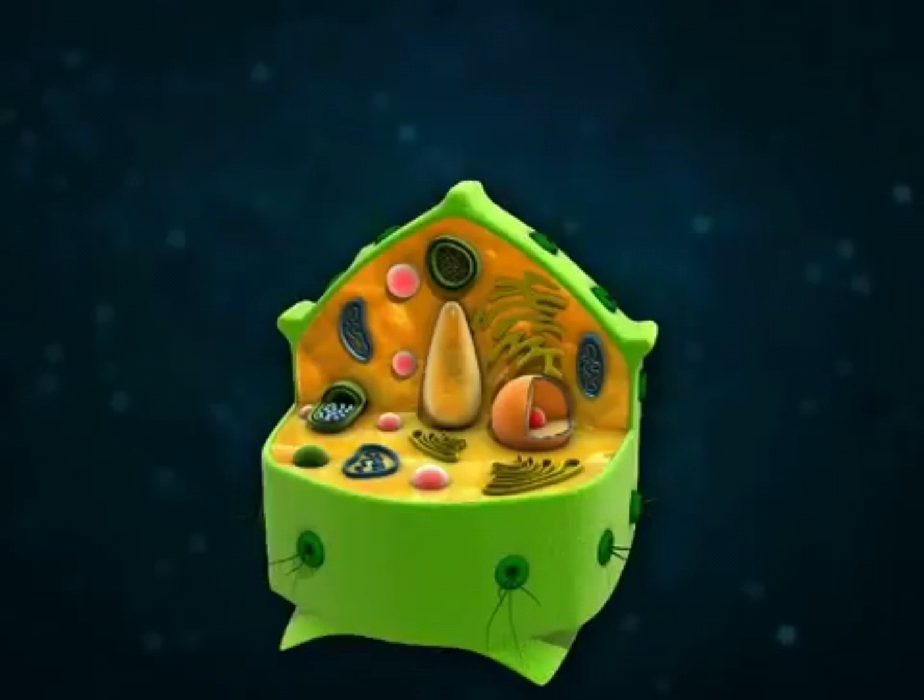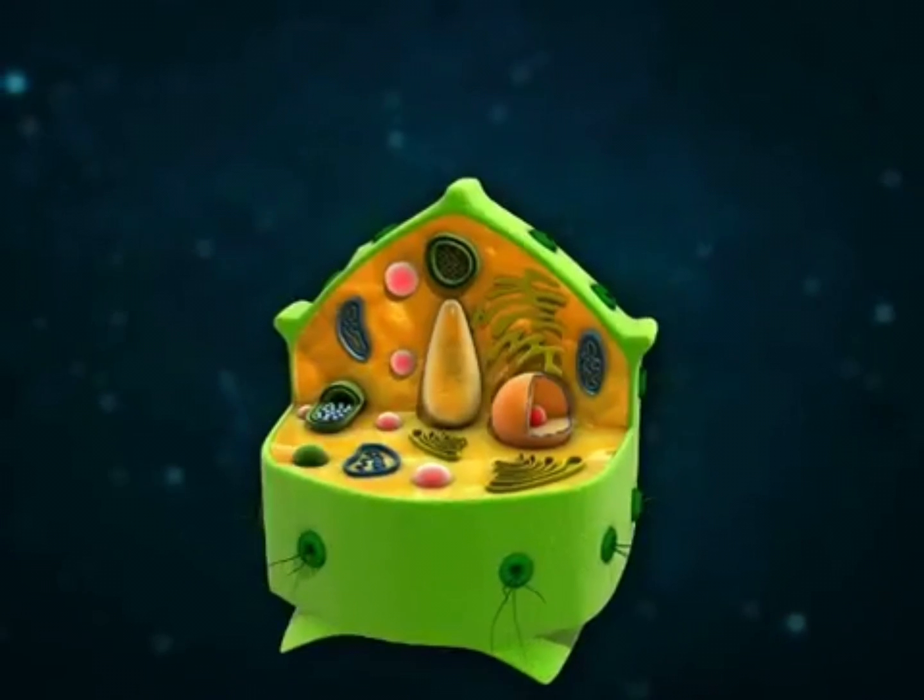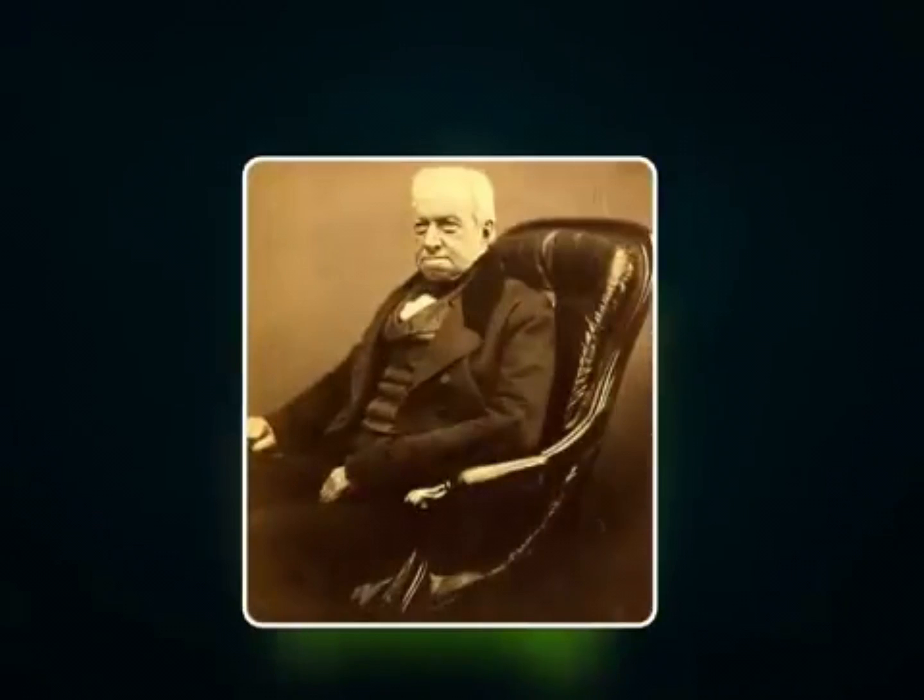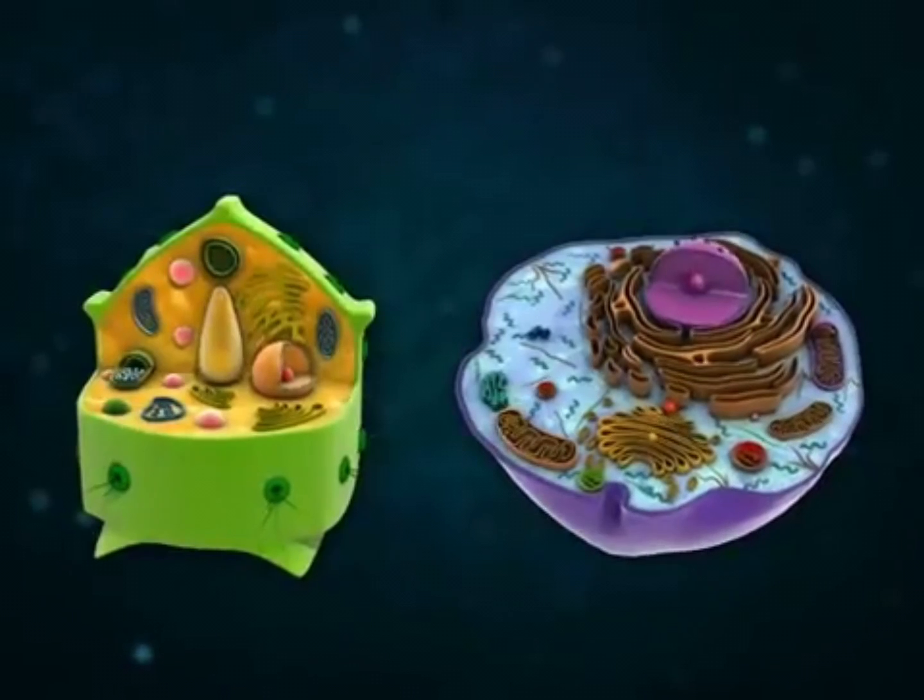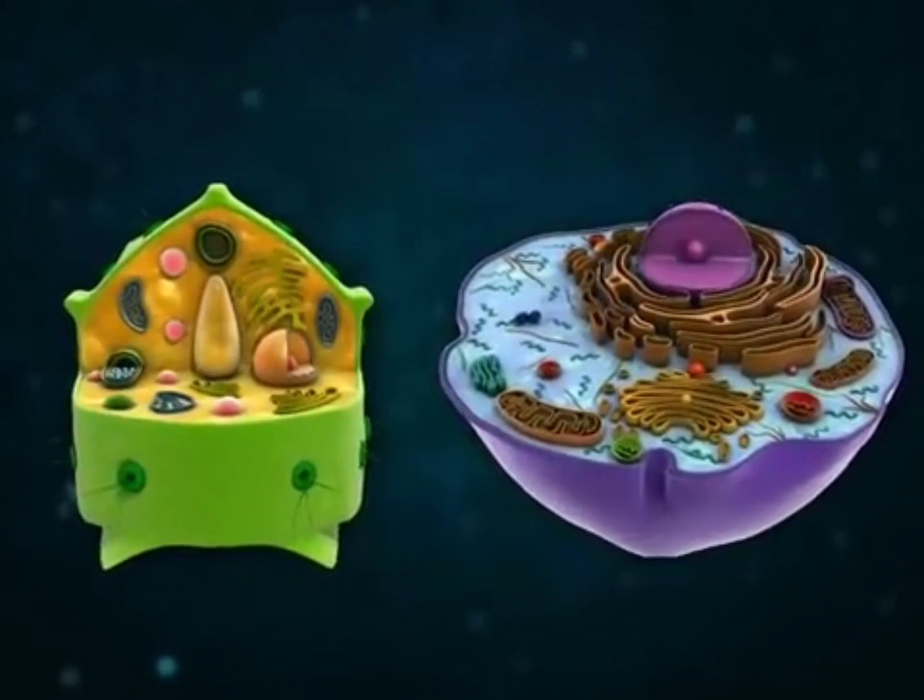The nucleus was first discovered and named by Robert Brown in 1831 in plant cells. It was quickly recognized as a constant feature of all eukaryotic plant and animal cells.